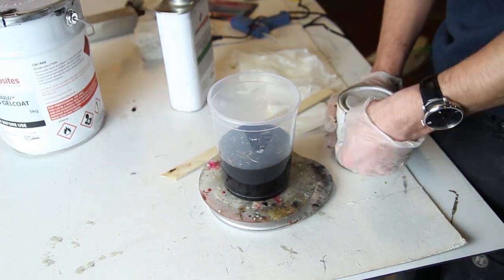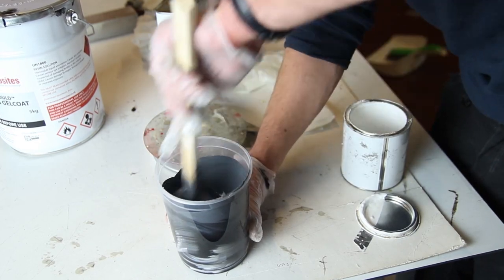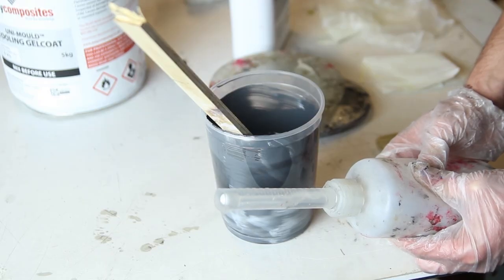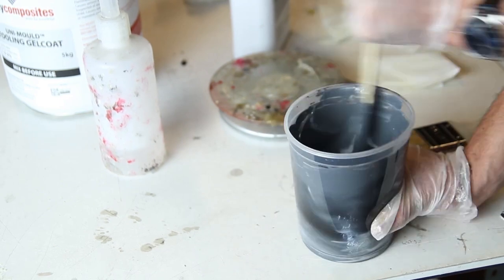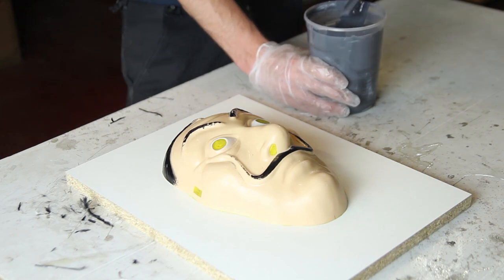So now we're ready to start with the mold making. I've just used the release agent first, so very important. In this shot before I just showed you one layer, but you have to apply five layers and then wait for one hour before you can start with this process.